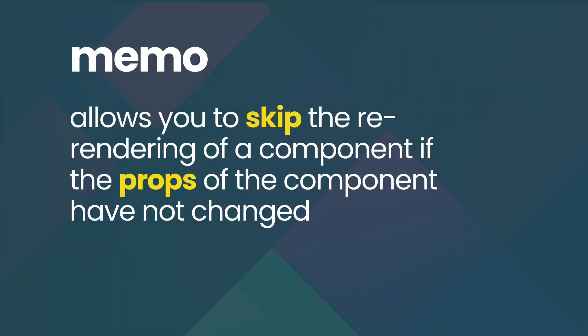In the previous lesson, we looked at the useMemo hook, which allows us to memoize values so that those values are not computed all the time if they don't need to be. We also have another function exposed from React known as memo. Memo works slightly similarly to the useMemo hook. In this lesson, we'll be learning about the memo function, which allows you to skip re-rendering of a component when the props of that component haven't changed — it memoizes that component and only re-renders it when the props change.